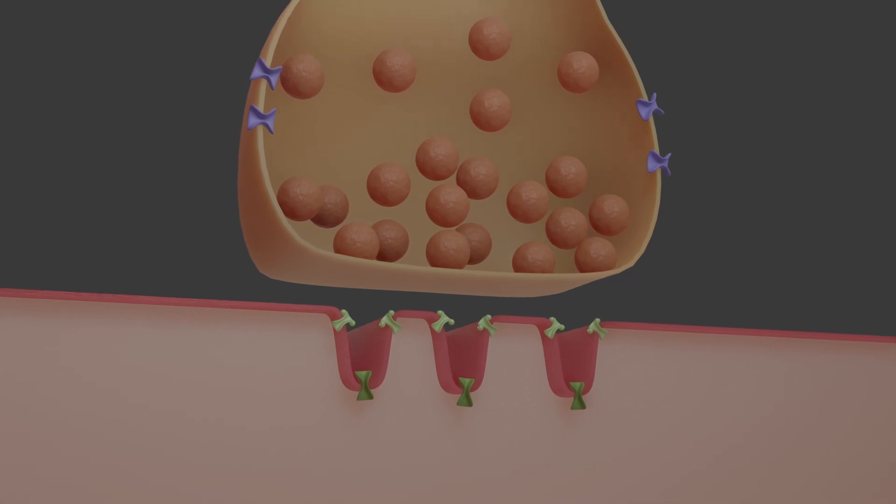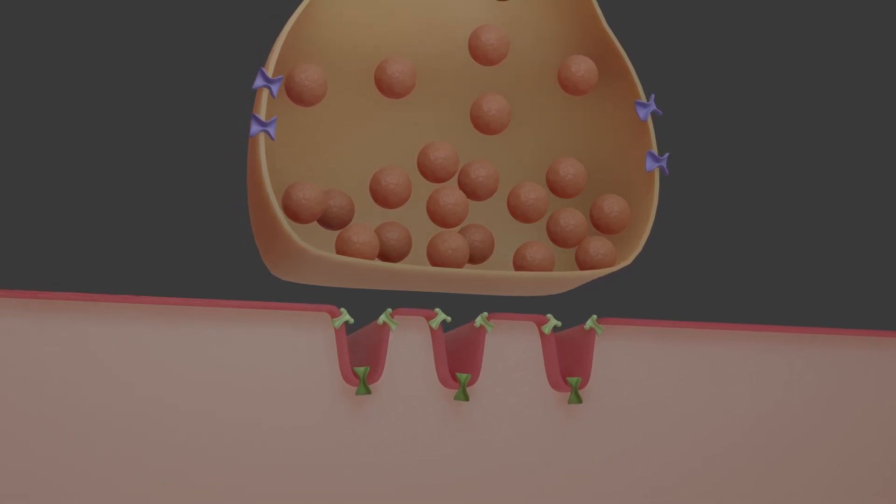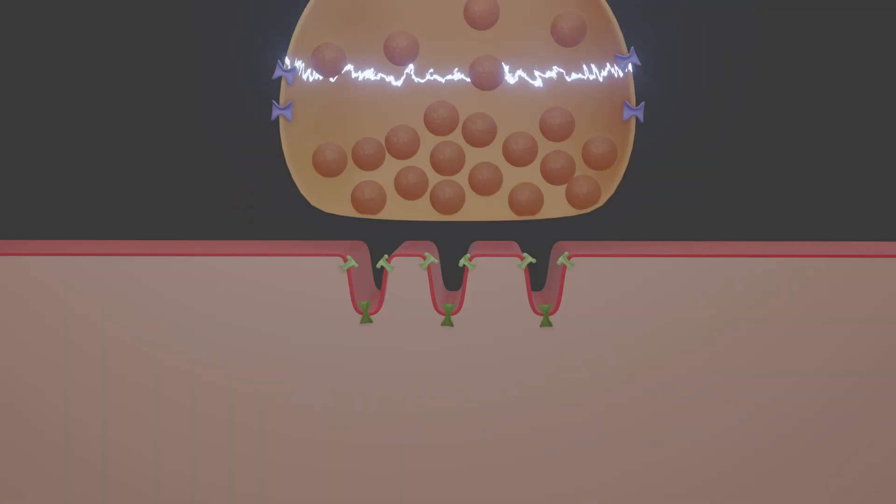The excitation transmission proceeds as follows. An action potential reaches the terminal button. This causes voltage-dependent calcium channels to open and calcium ions to flow in. This causes the vesicles to move towards the synaptic cleft.